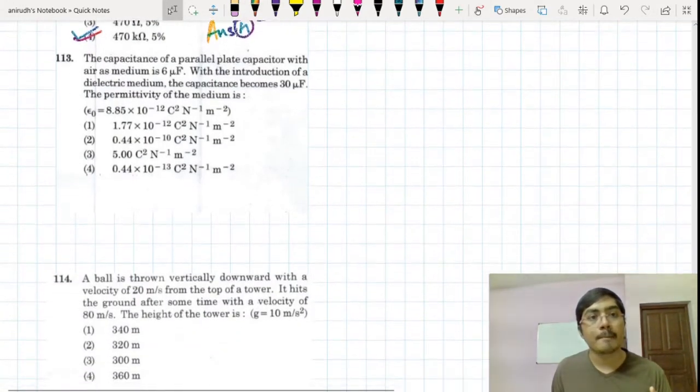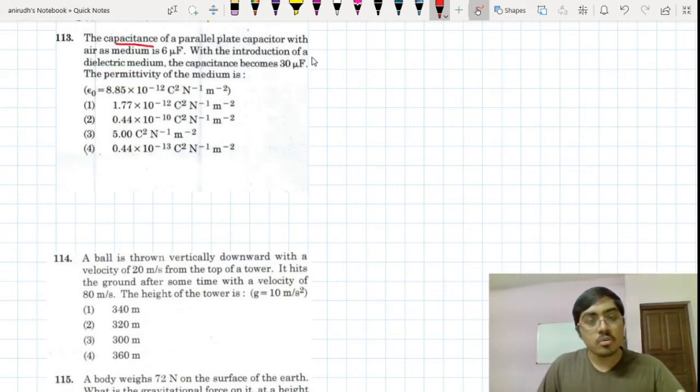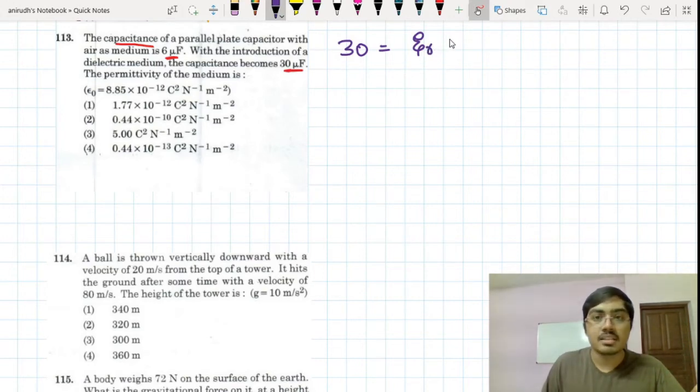Question number 113 is from the topic of electrostatics again, but this time it is actually about a capacitor. Capacitance is 6 microfarad with air as the medium. When with the introduction of a dielectric medium, the capacitance becomes 30 microfarad. So obviously, capacitance is equal to 30, so that is equal to epsilon r multiplied by C naught. So C naught is the initial one, 6.